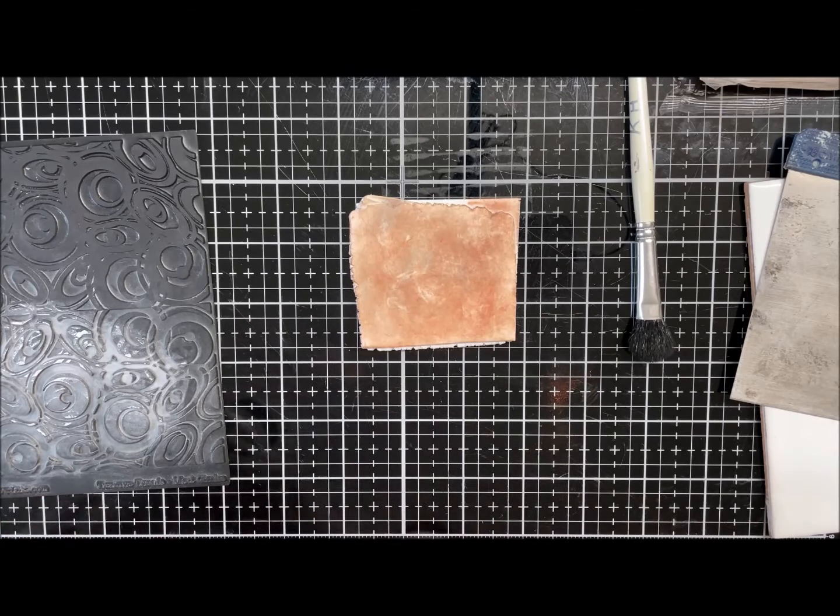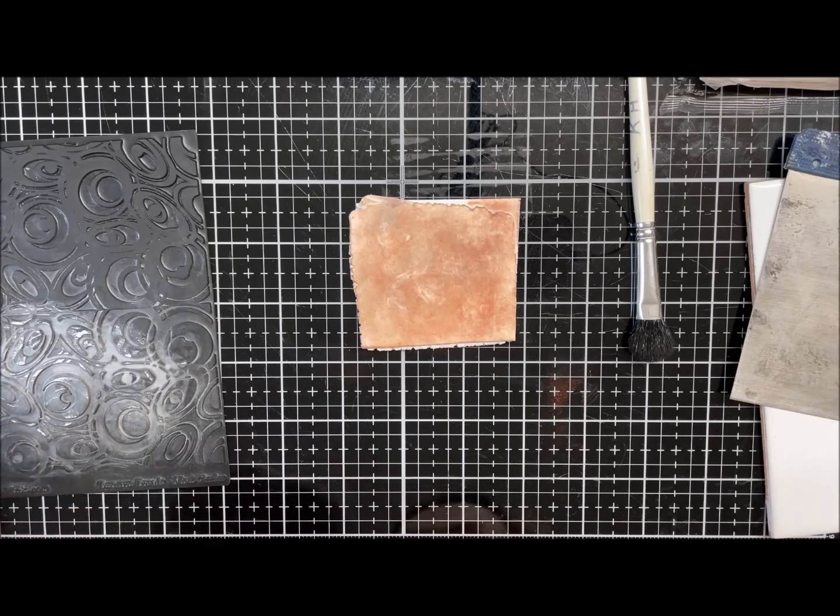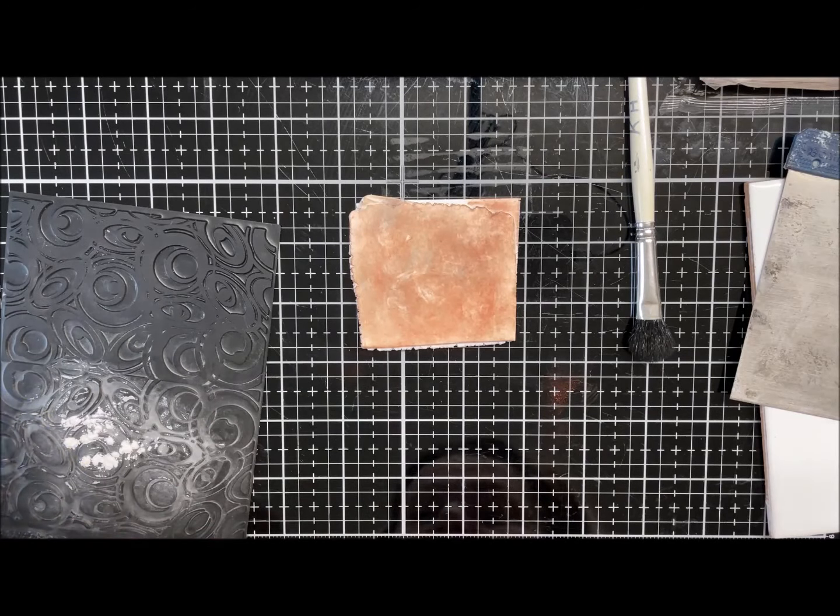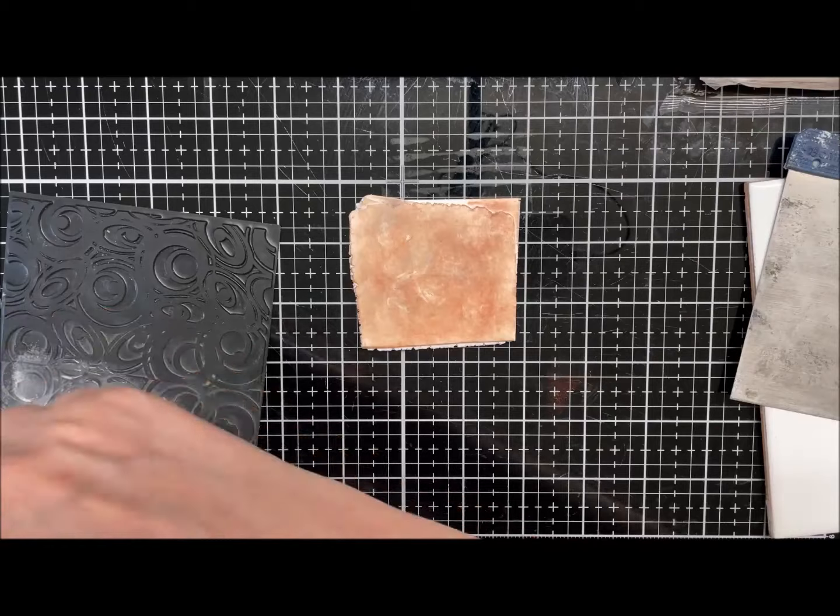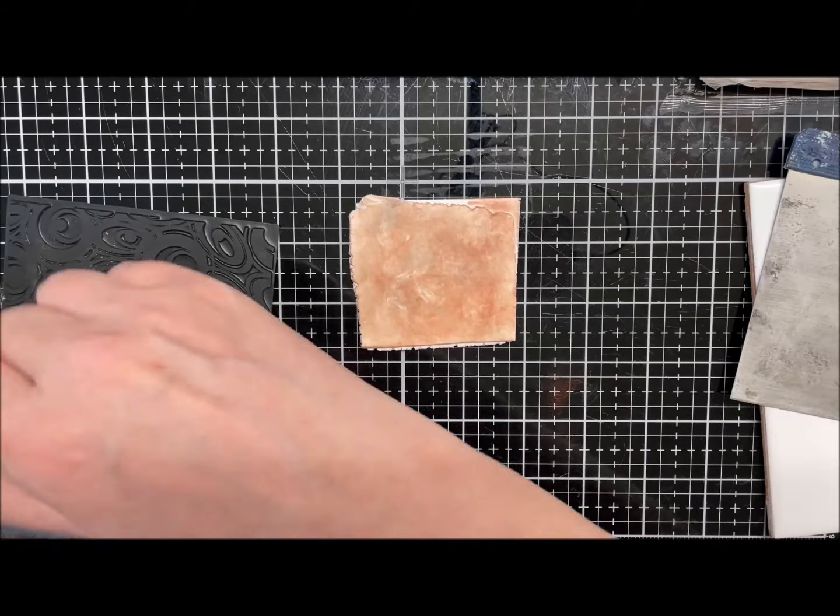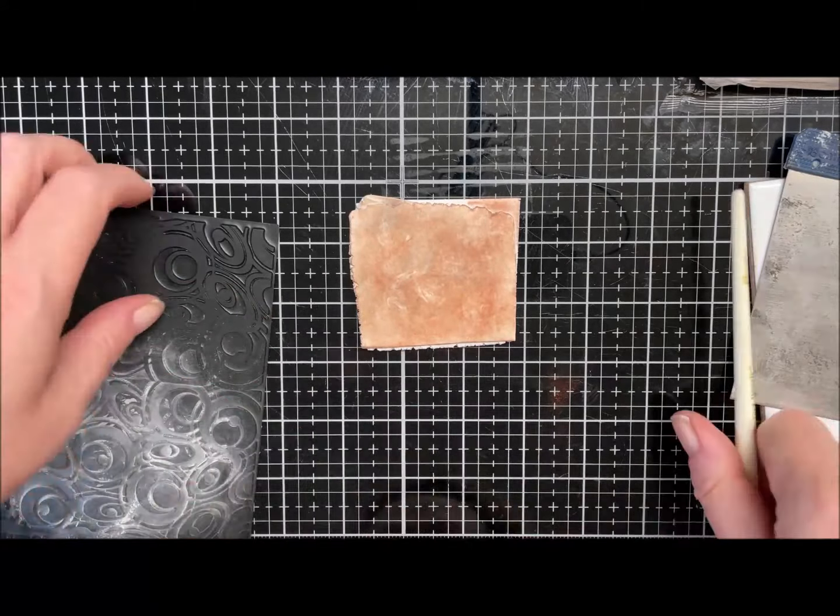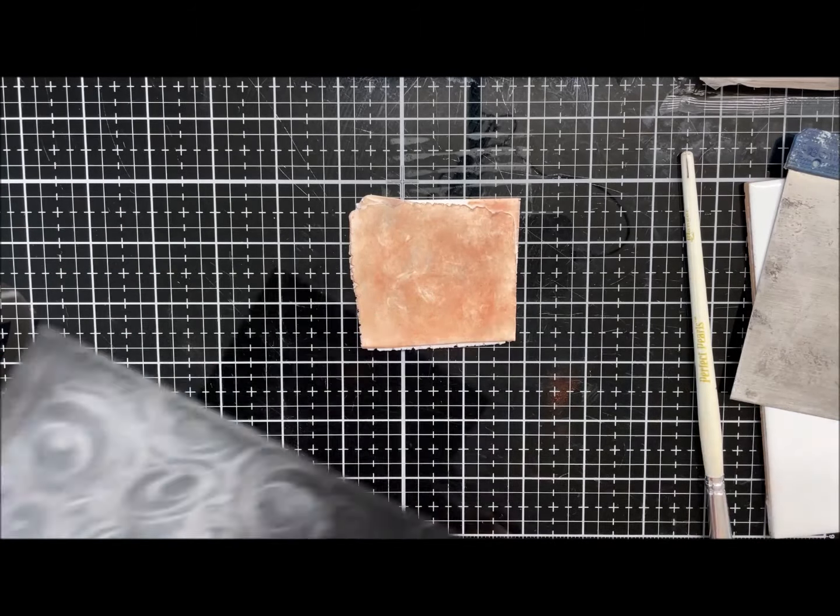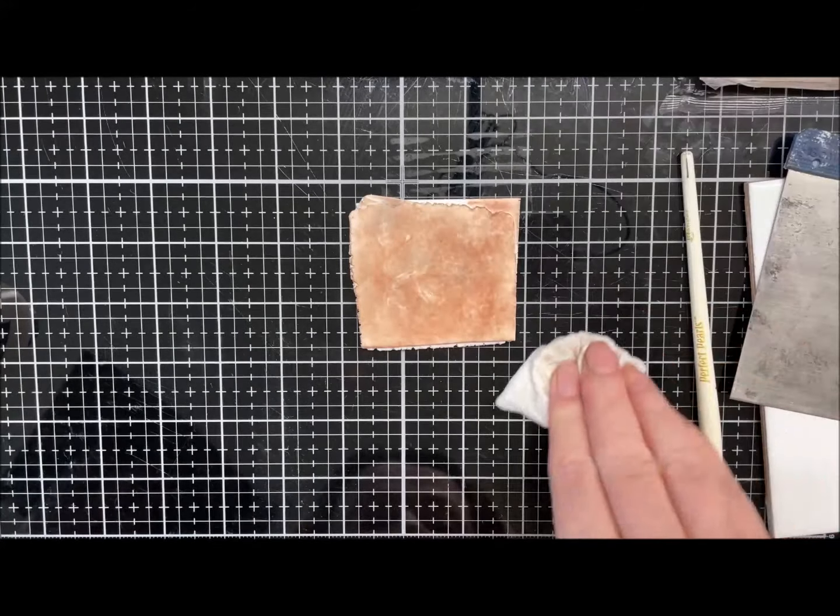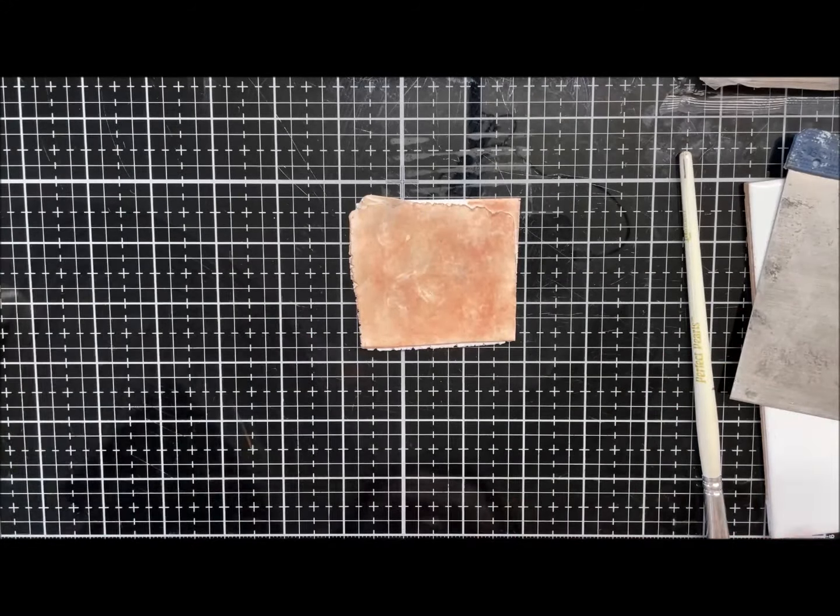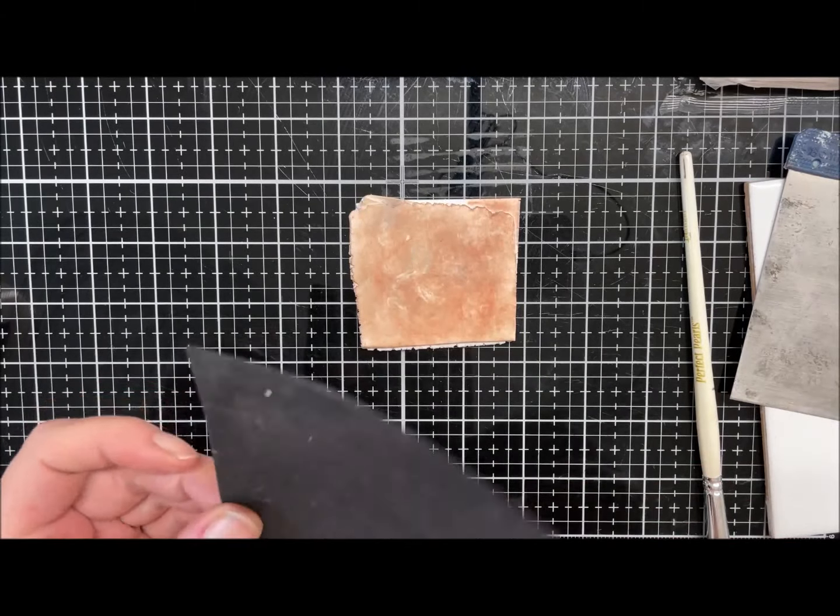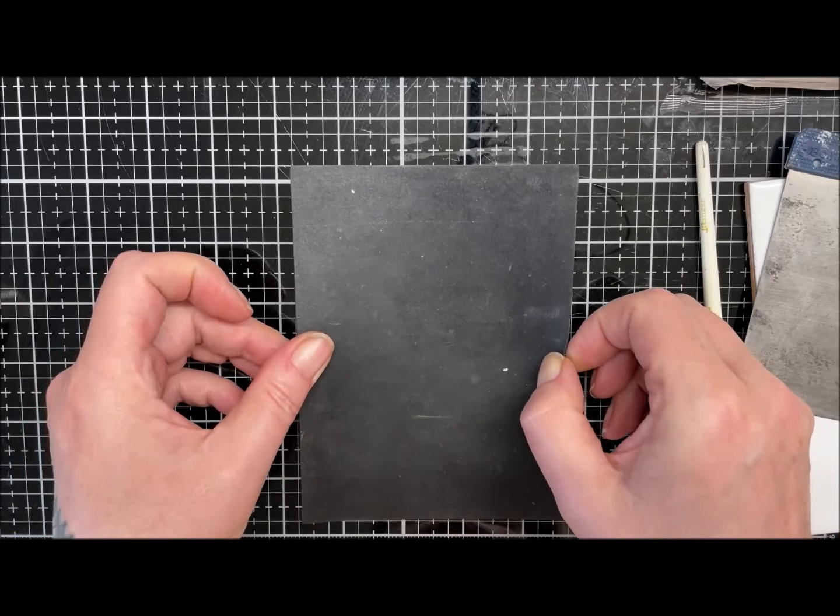I'm just going to pop a little bit of talc on because these have a tendency to stick. I'll just swirl that in with my brush, tap the excess off. I'm just going to pop my texture sheet on there now.